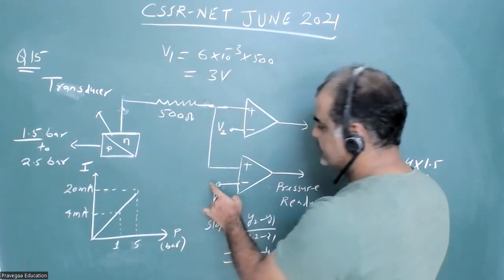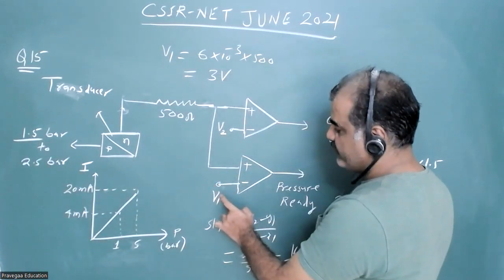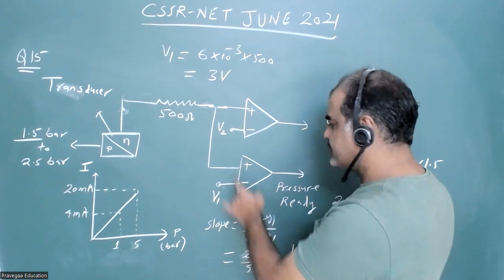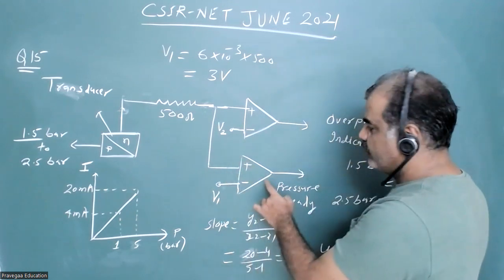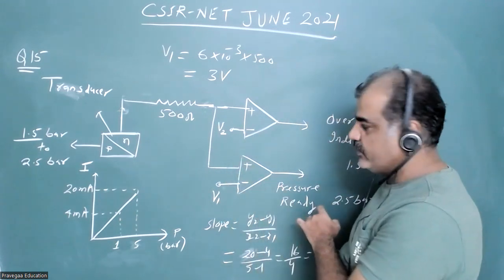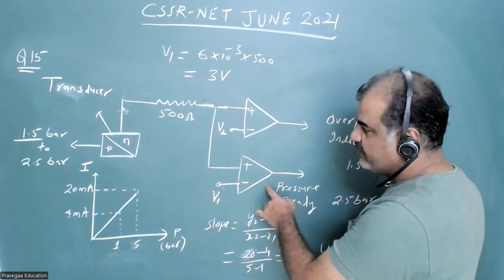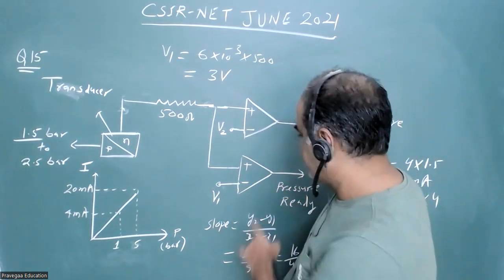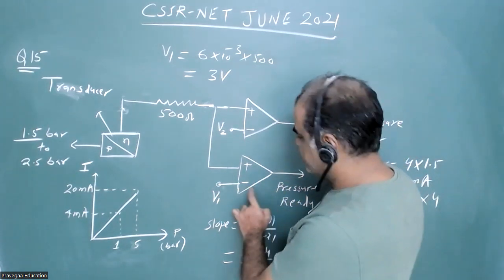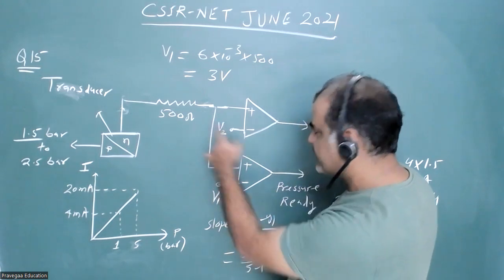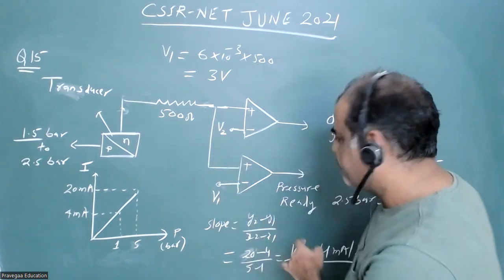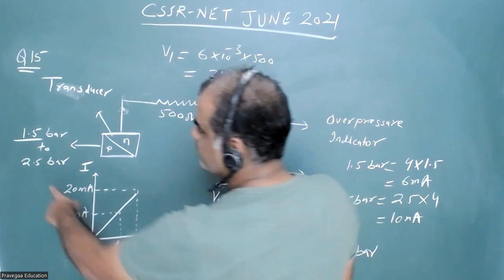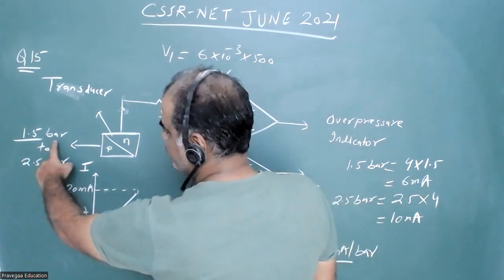This is a comparator circuit, so the output of this op-amp will saturate at 1.5 bar and will indicate that the apparatus is ready for performing the experiment. After that, we have to raise the pressure up to 2.5 bar.